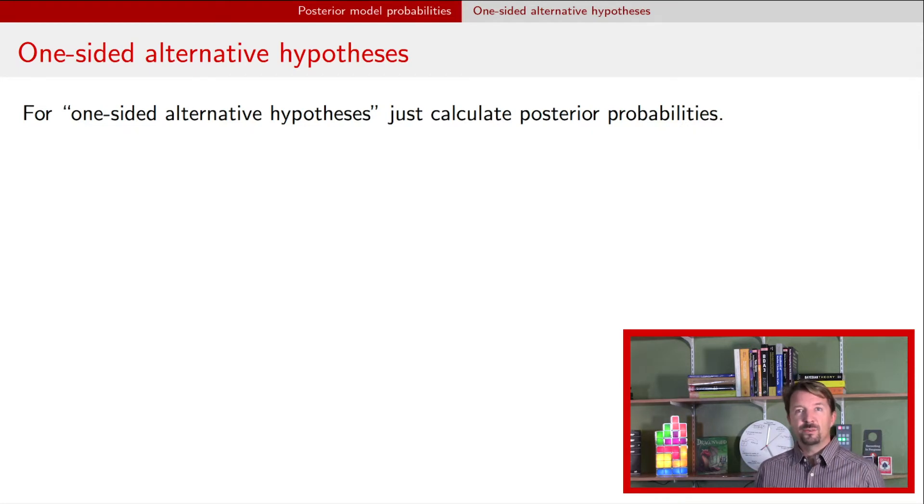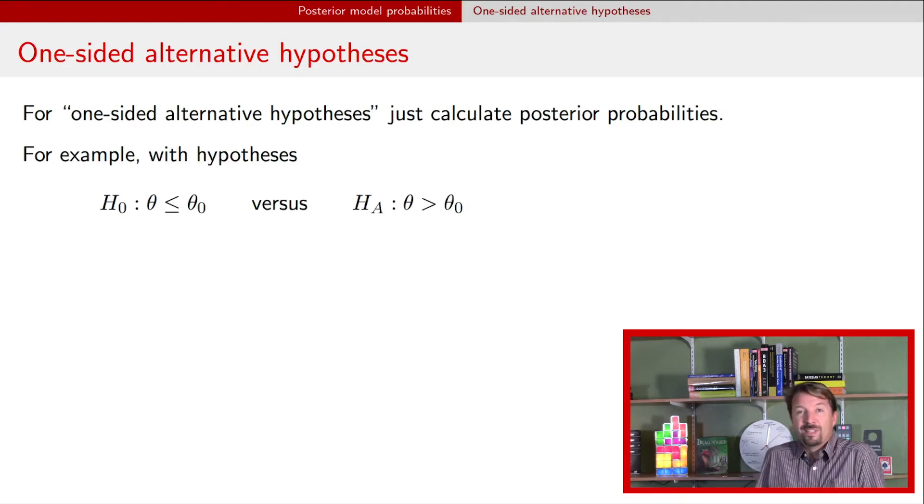So in situations where you have a null and an alternative and the alternative hypothesis is a one-sided hypothesis, it means something like this. Your null is that the parameter value is less than or equal to a particular value, call that particular value theta naught, and your alternative says that it's greater than that value theta naught. Then really as far as a Bayesian is concerned this is not a hypothesis test at all.